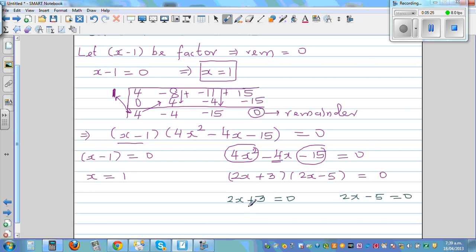Adding minus 3 to both sides, 2x is equal to negative 3. Dividing both sides by 2, x is negative 3 over 2, which is minus 1.5. And this is x is equal to, so 2x is equal to 5, by adding 5 to both sides and dividing by 2.